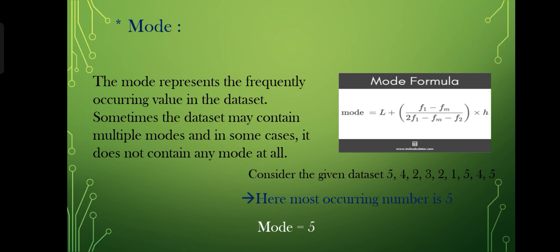The data set may contain multiple modes and in some cases it does not contain any mode at all. The formula for mode is L + [(f1 - fm) / (2f1 - fm - f2)] × h.